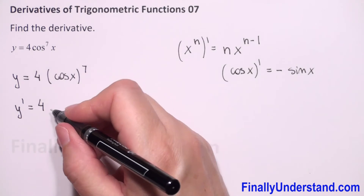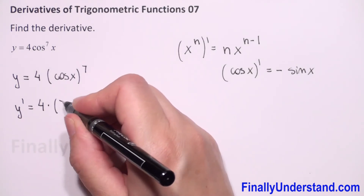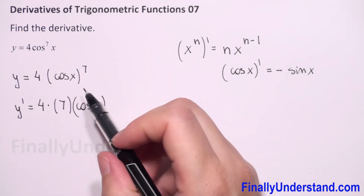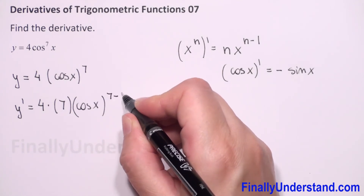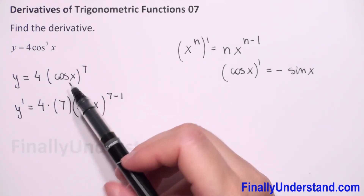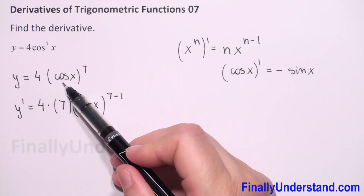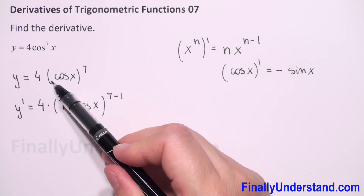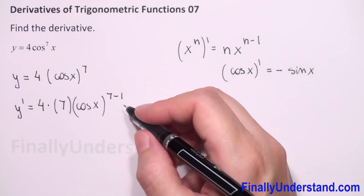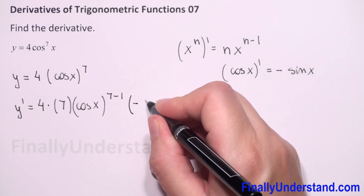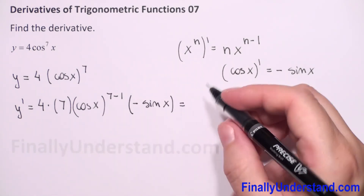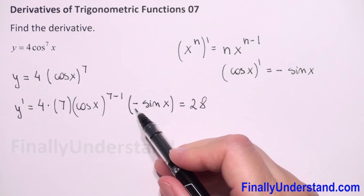Now we have to find the derivative of (cosine of x) to the 7th power. We use the formula — we take the power down, so we get times 7 times (cosine of x) to the power 7 minus 1. Because we have a composite function, we also find the derivative of the inside function. The derivative of cosine is negative sine of x.